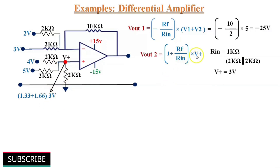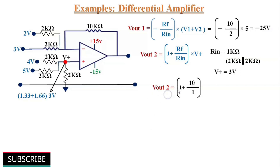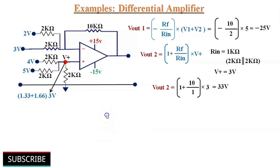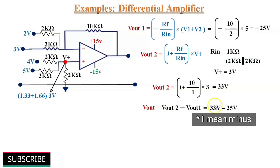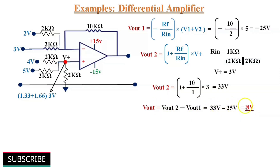Vout2 = (1 + Rf/Rin) × V⁺ = (1 + 10 kΩ/1 kΩ) × 3 V = 11 × 3 = 33 V. Therefore, the differential output voltage Vout = Vout2 − Vout1 = 33 − (−25) = 33 + 25 = 8 V. Wait — Vout = 33 − 25 = 8 V output from this differential amplifier.